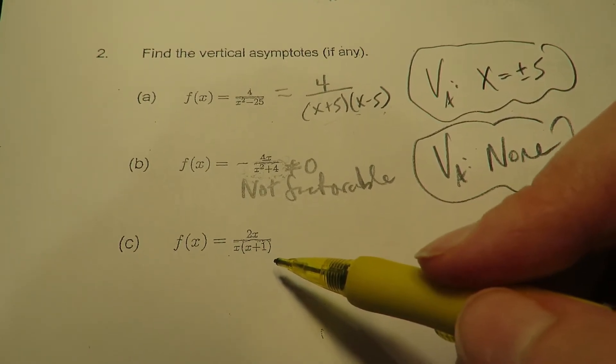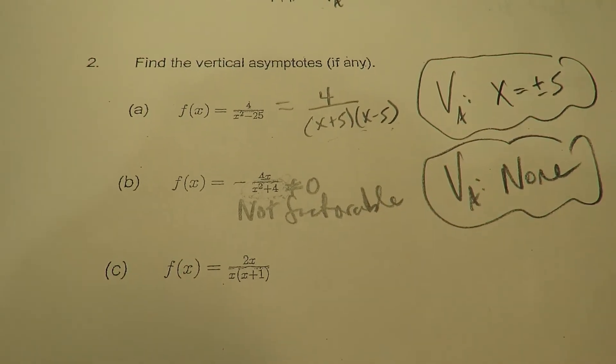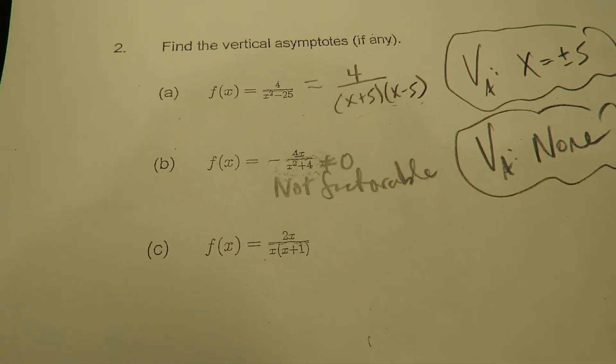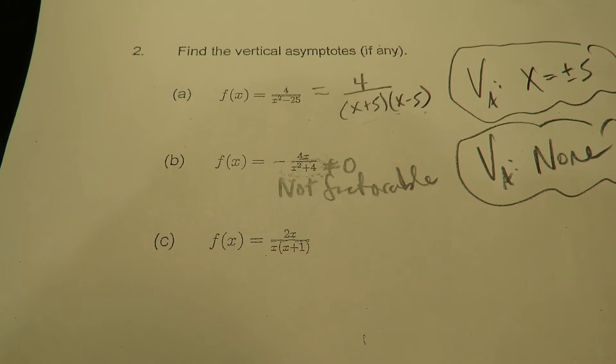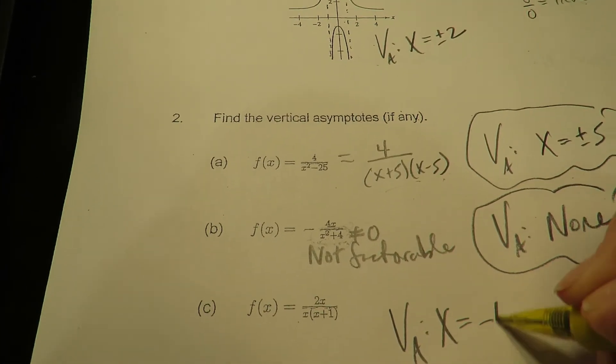Alright, now this one's a little tricky. It's already factored. Now where do you think, does this have a VA, 1, none, 2, what do you think? Alright, hopefully you just said that the VA here is x equals to negative 1.